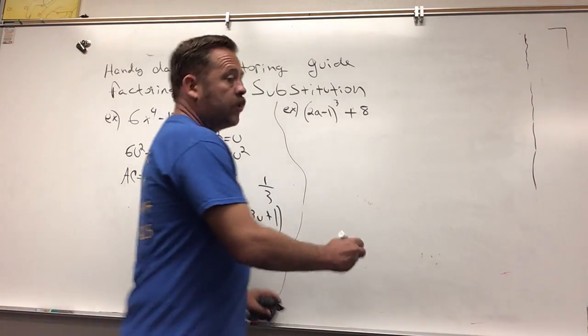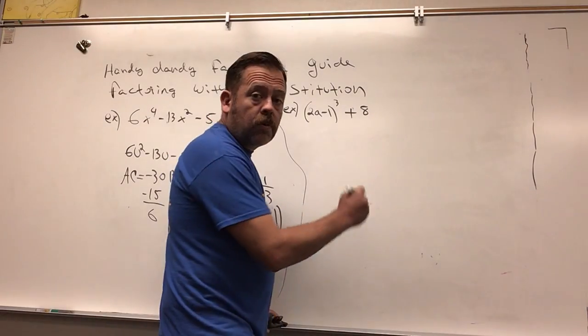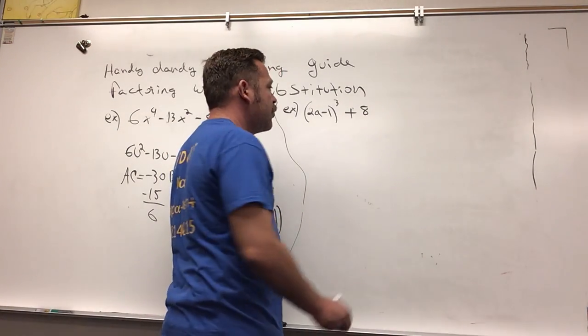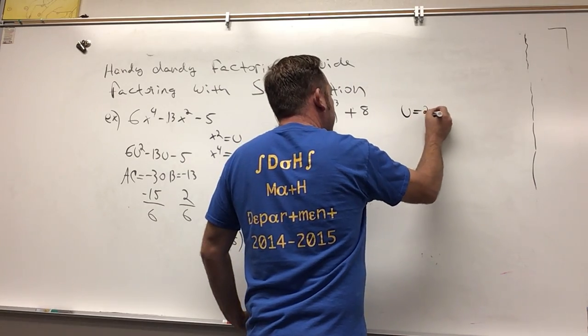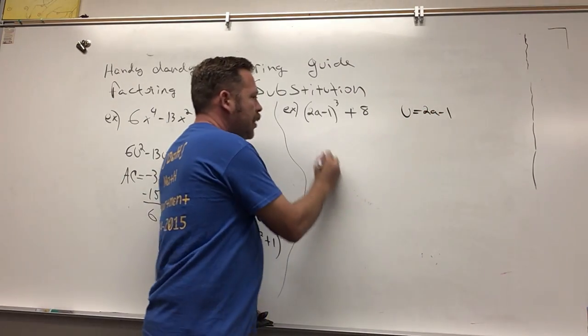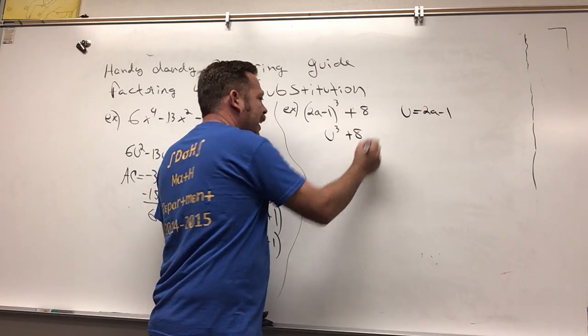Substitution is like a tool to help us do one of the other types of factoring. What I'm going to say is u equals 2a - 1. So now I have u³ + 8.